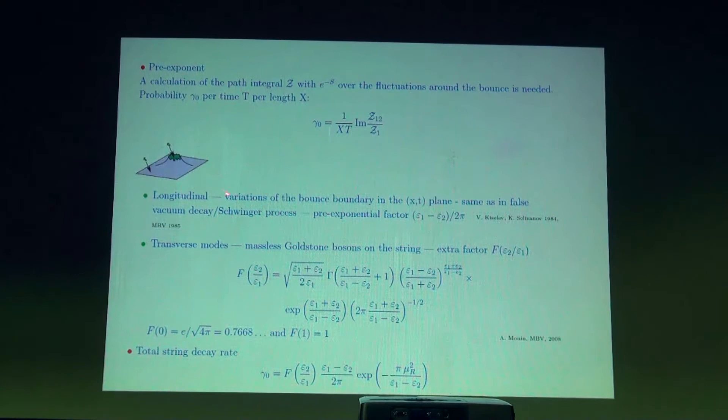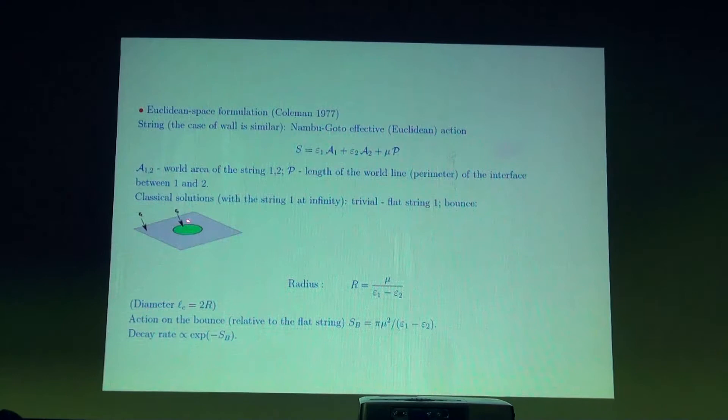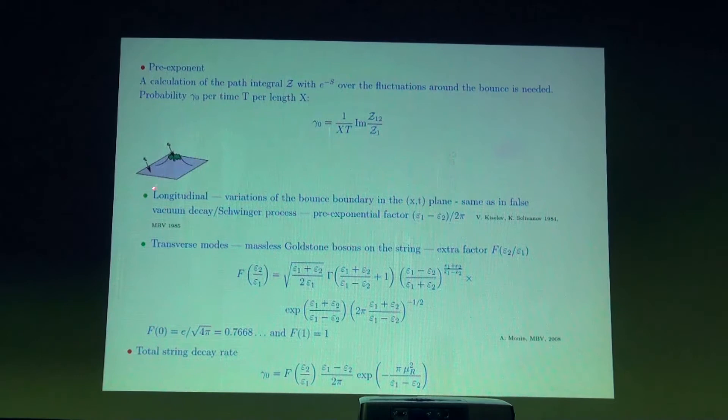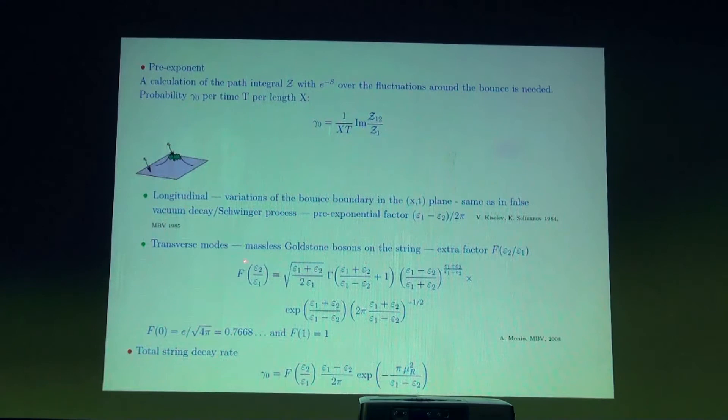In order to take into account the fluctuations, one should split them into longitudinal — deformations of the shape of the circle in the plane of the world-sheet of the initial string — and perpendicular degrees of freedom. The longitudinal fluctuations in the plane give exactly the same factor as in false vacuum decay. Taking into account the perpendicular degrees of freedom is a little bit more tricky.